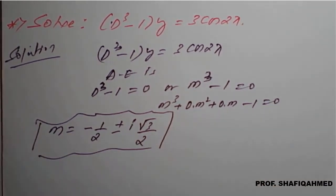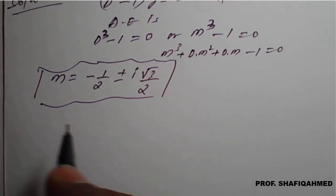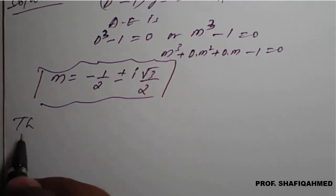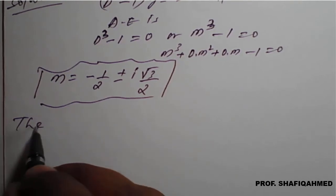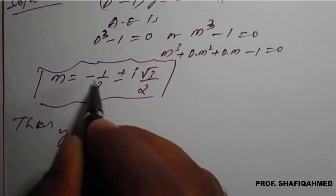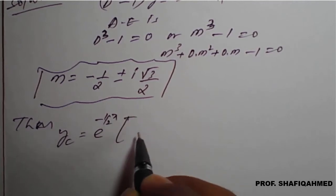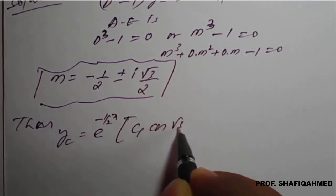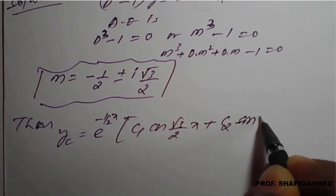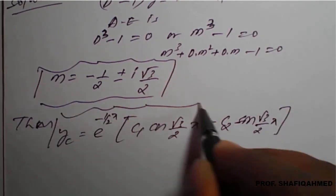This is a complex root — real part with imaginary part. Therefore, the complementary function is: the real part is -1/2, so CF = e^(-x/2) [c₁ cos(√3/2 · x) + c₂ sin(√3/2 · x)]. This is the complementary function.